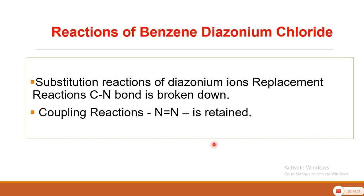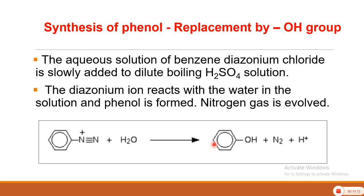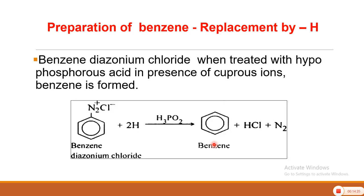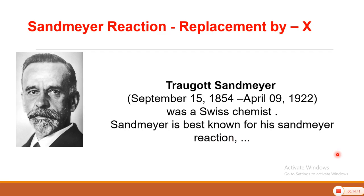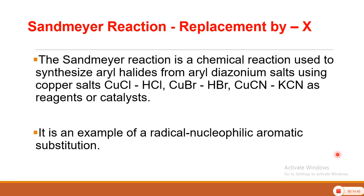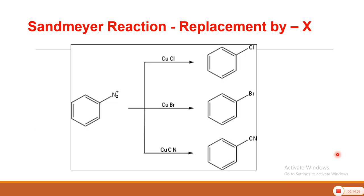Benzene Diazonium Chloride shows two types of reactions: replacement reactions and coupling reactions. This video covers only replacement reactions. The first is replacement by OH — treating Benzene Diazonium Chloride with boiling dilute H₂SO₄ gives phenol. Using hypophosphorous acid in the presence of cuprous ions gives benzene (replacement by H). Using potassium iodide gives replacement by iodine. As per the Sandmeyer reaction, using CuCl/HCl, CuBr/HBr, and CuCN/KCN gives replacement by chlorine, bromine, and cyanide respectively. In the Sandmeyer reaction, the important feature is that copper salts are used.